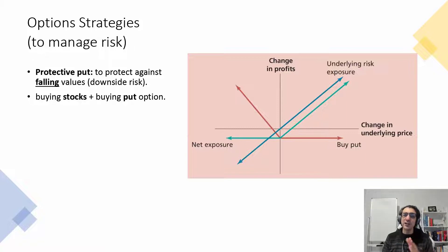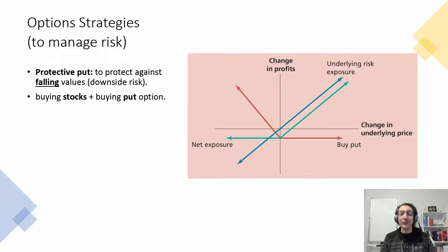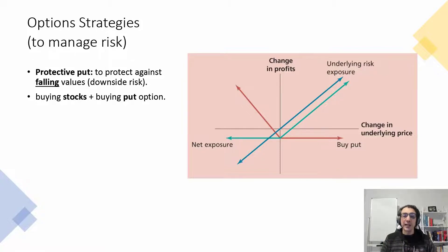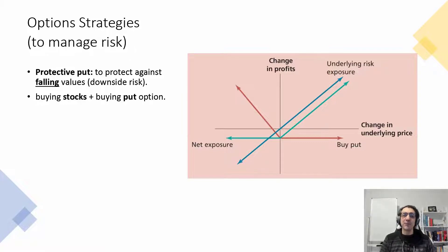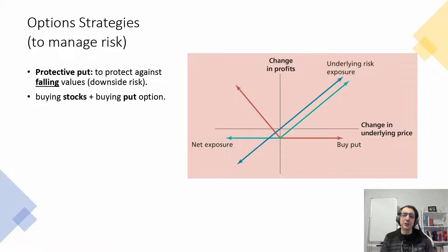As prices are going down you are happier because you can sell at the exercise price. If prices are going up, you are unhappy because you will lose as much as the option price and you won't exercise your put option. Now combining the blue and orange arrows gives you the green arrow — on the downside, the maximum you can lose is as much as the option price or premium. However, as prices keep going up, you can gain potentially unlimited profit. So your downside risk is limited to the option price. That's the protective put strategy.